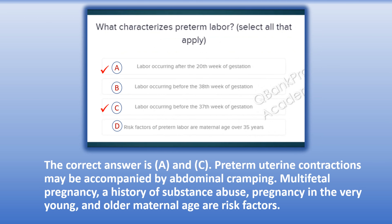The correct answers are A. Labor occurring after the 20th week of gestation, and C. Labor occurring before the 37th week of gestation. Explanation: Preterm uterine contractions may be accompanied by abdominal cramping. Risk factors include multifetal pregnancy, a history of substance abuse, pregnancy in the very young, and older maternal age.